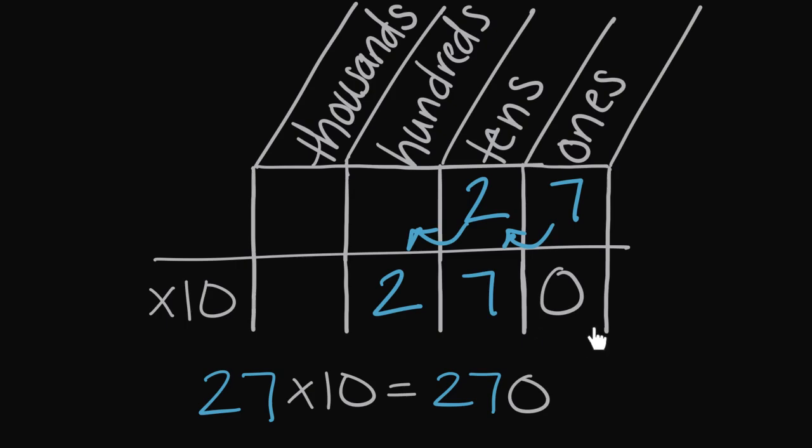So whether we think about it as adding a zero to the end or moving a place value to the left, multiplying by 10 creates a really neat pattern that we can use to help us to solve these problems.